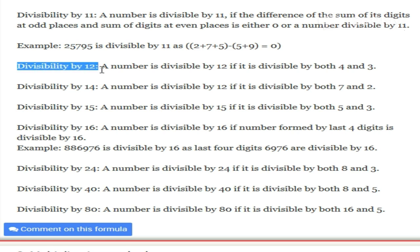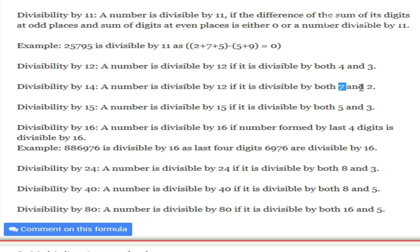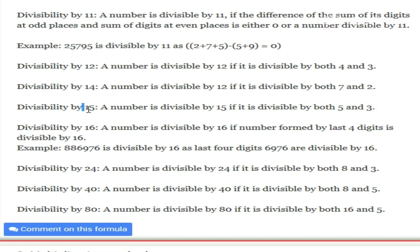Divisibility by 12: a number is divisible by 12 if it is divisible by both 4 and 3. Remember, 4 times 3 equals 12. In the case of 14, if a number is divisible by both 7 and 2, it is also divisible by 14, since 7 times 2 equals 14. Similarly, for 15, if a number is divisible by both 5 and 3, it will be divisible by 15, since 5 times 3 equals 15.